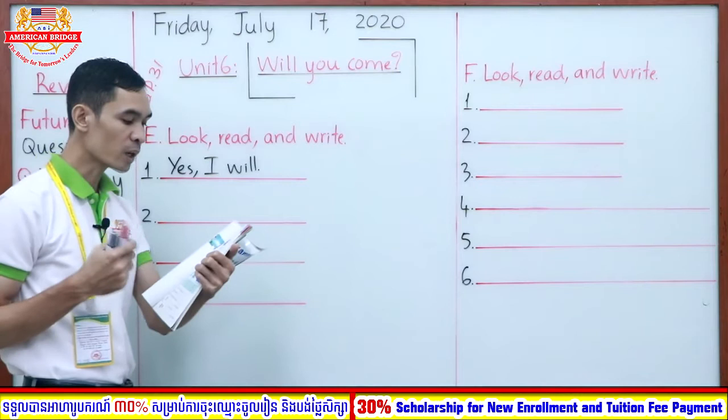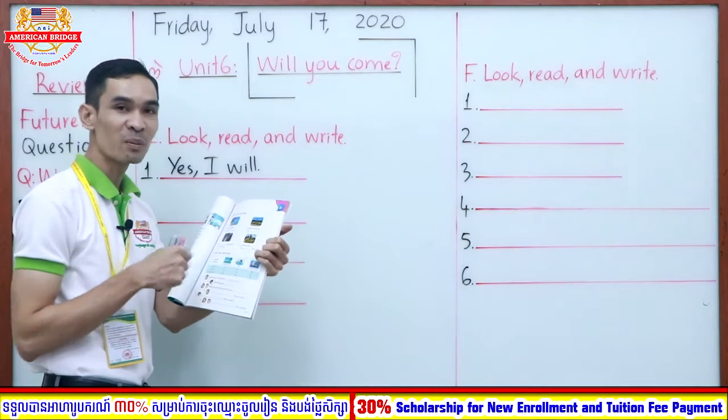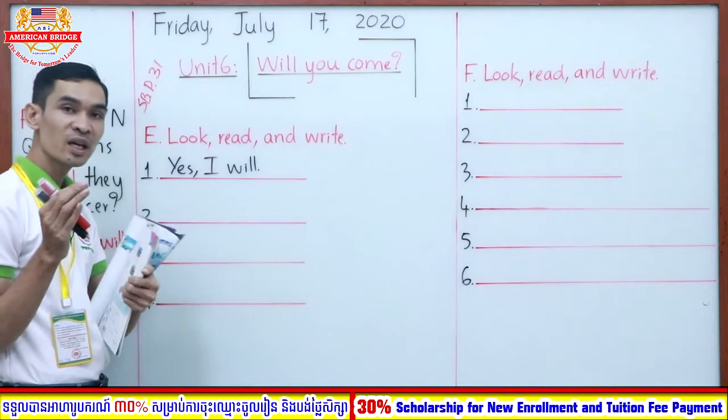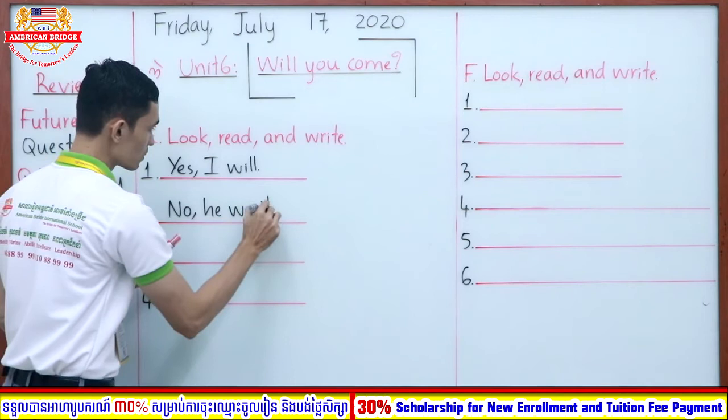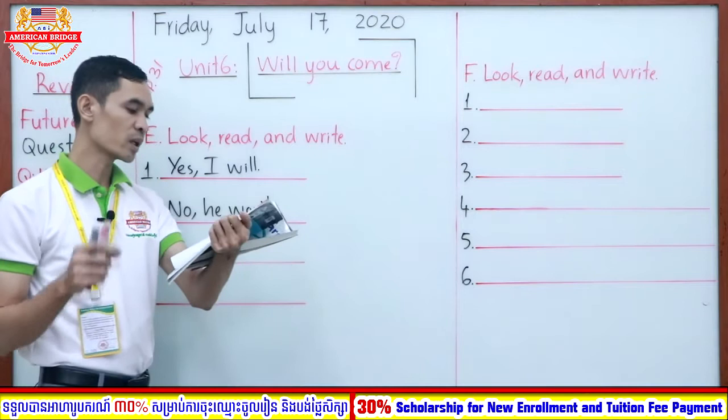Will he ride a boat? Look at the picture — will he ride a boat? No, right? He is riding a boat. So: 'No, he...' — you speak 'won't,' right? Very good. 'No, he won't.'